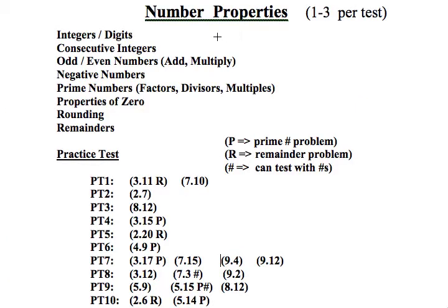The concepts tested under number properties include integers and digits, consecutive integers, properties of odd even numbers, adding them, multiplying them, negative numbers, prime numbers, factors, divisors, multiples, properties of zero, rounding, and remainders.